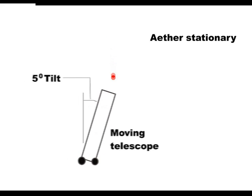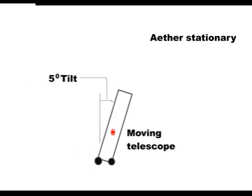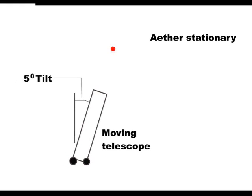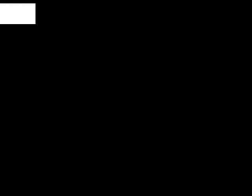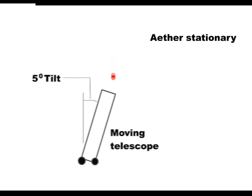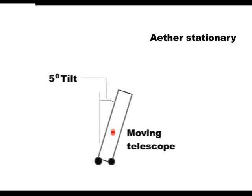In 1729, Bradley found that he had to tip his telescope forward very slightly to get a star in the centre of his telescope. It was assumed that this was due to the motion of the Earth around the Sun.